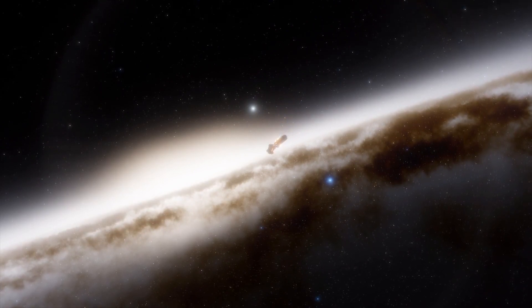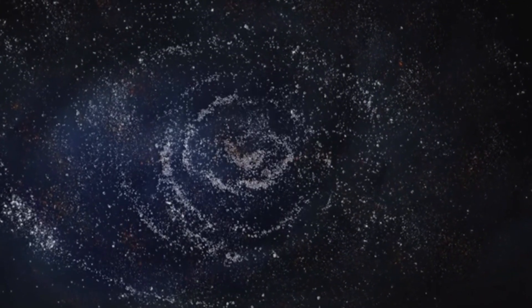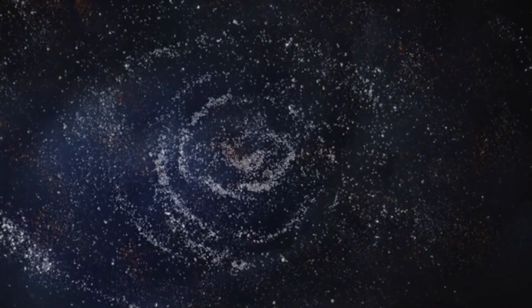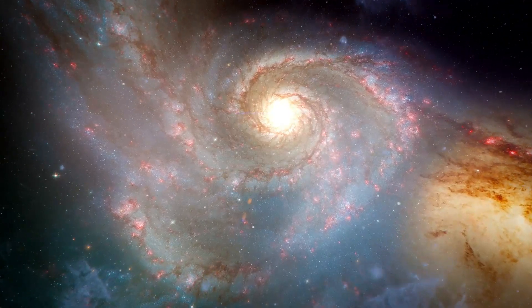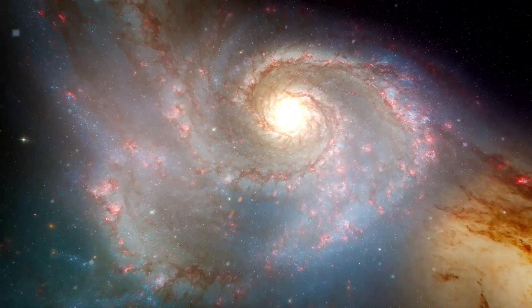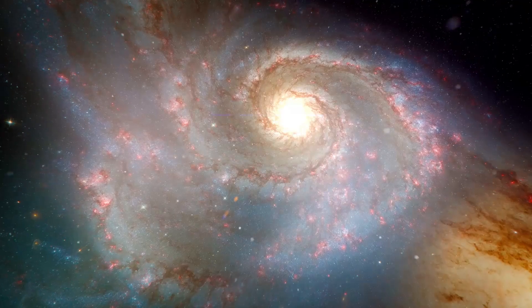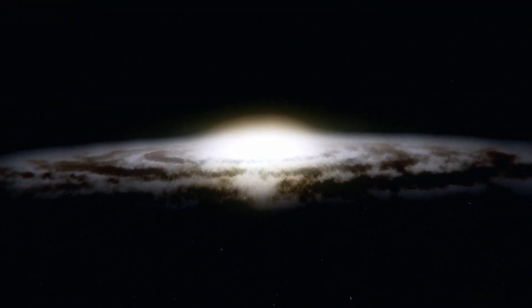Unlike lighter elements, iron doesn't release energy when fused. So the energy produced isn't enough to resist the star's own crushing gravity. The star balloons in size and creates an implosion, followed by a massive rebound effect resulting in the explosive force of a supernova. So is Betelgeuse on the brink of an explosive end, or just biding its time?